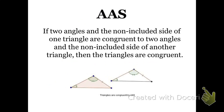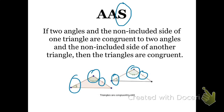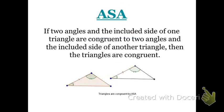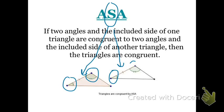Another triangle congruence conjecture is Angle-Angle-Side. If two angles and the non-included side of one triangle are congruent to two angles and the non-included side of another triangle, then the triangles are congruent. Notice how in AAS the S is outside the two A's, meaning the congruent side is outside the two congruent angles. In ASA, the S is between the two A's, meaning the side is between the two congruent angles. That's the key difference between Angle-Side-Angle and Angle-Angle-Side.